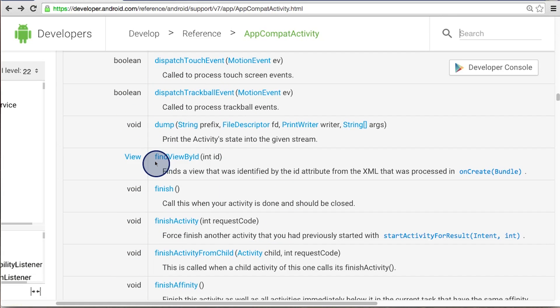This means that within our activity code, we can call FindViewById, pass in the resource ID of the view that we want, and then it will return a view object. And then we can store that as a variable within the activity.